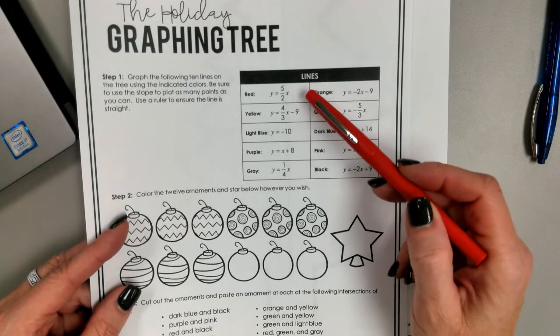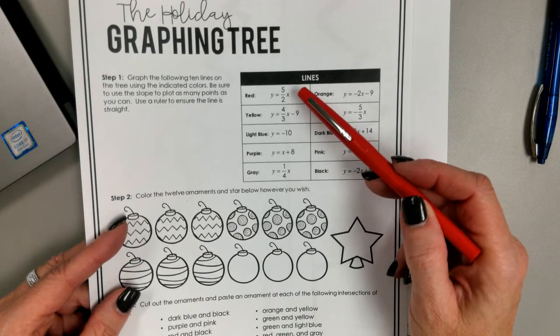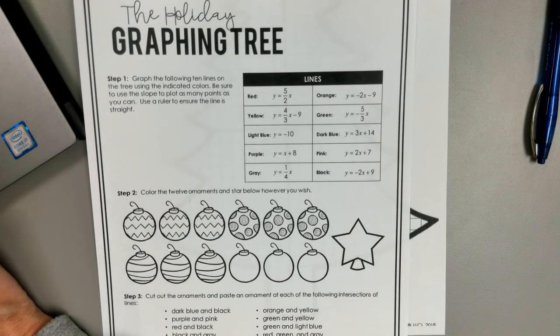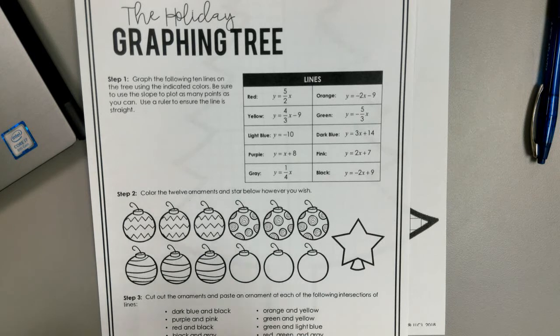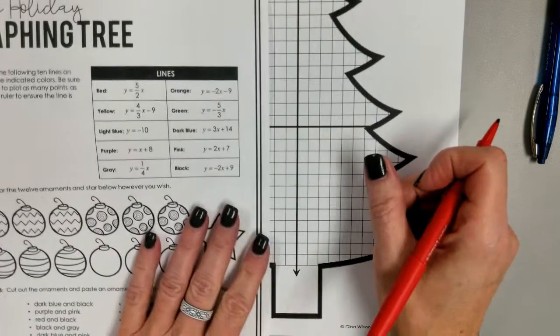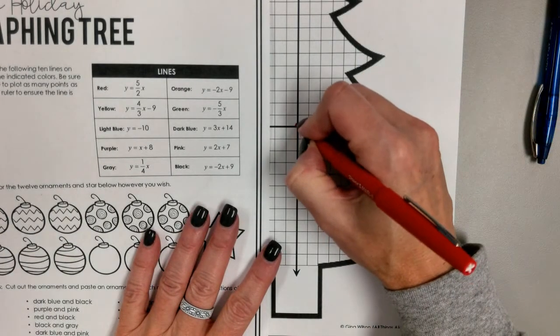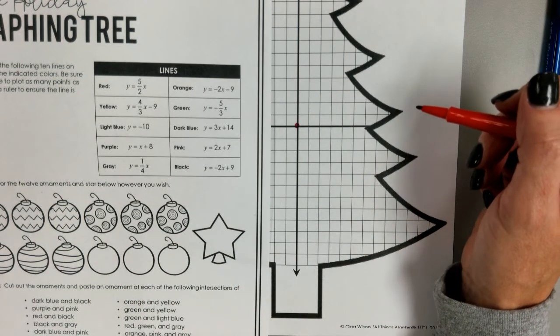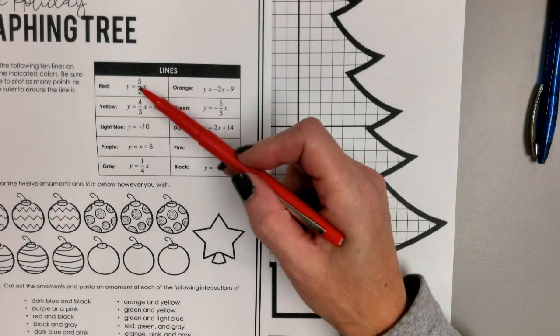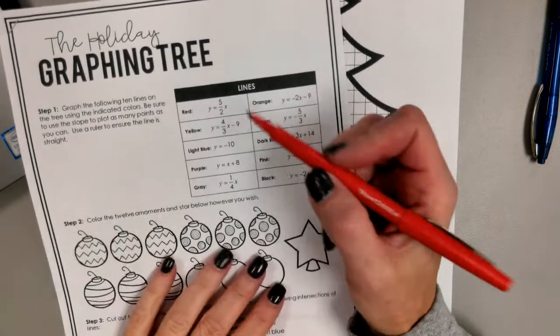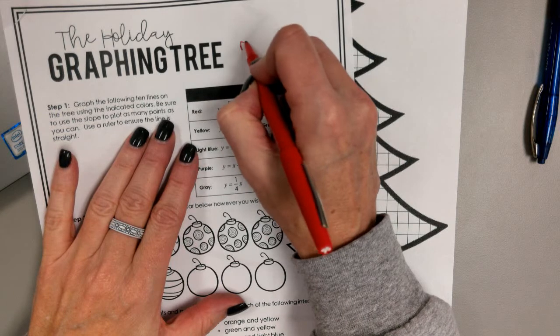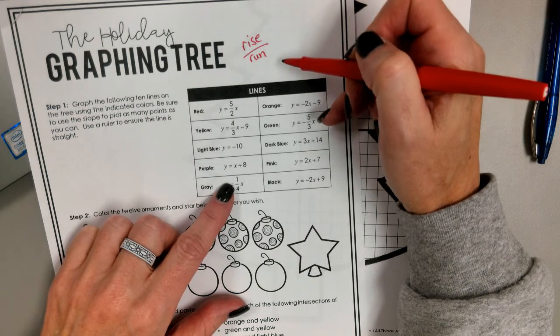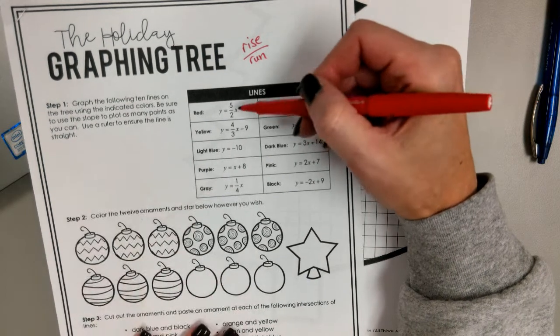Okay, so step number one was to graph all of these lines onto this Christmas tree. The quadrants are all there for you. So the first one was your red line and it said y equals five halves x. There's no plus or minus number, so we know that means the line is going to go through the origin.